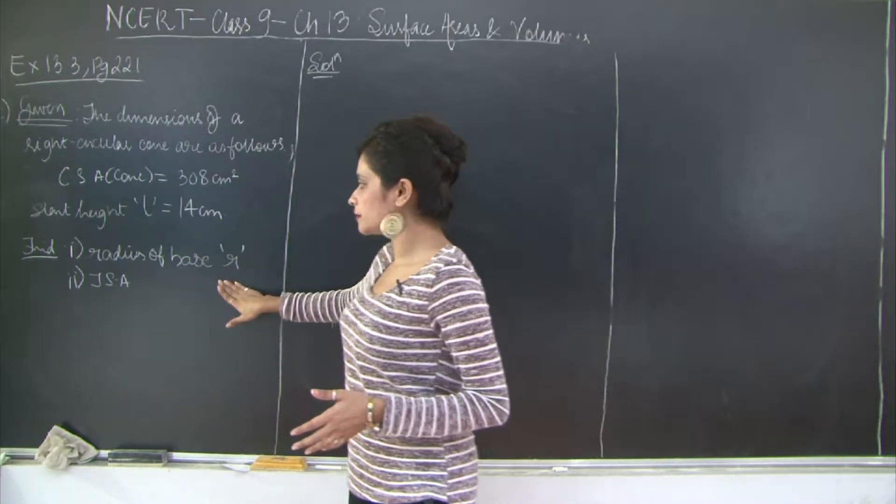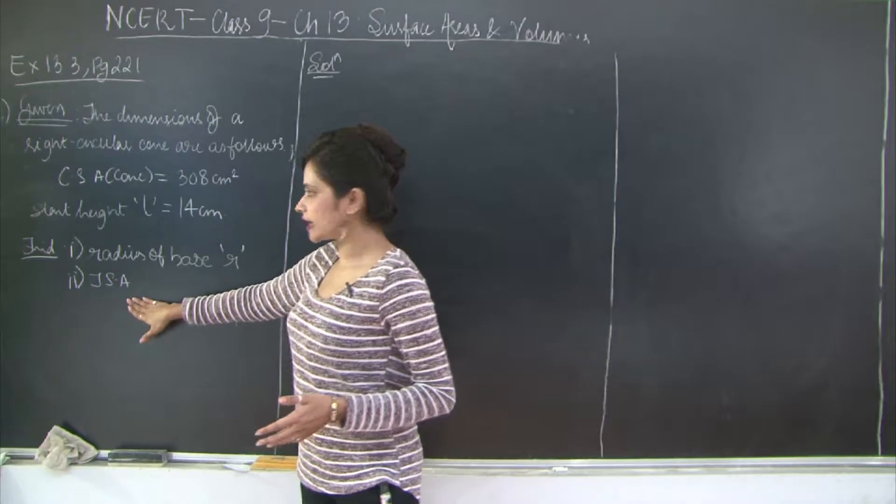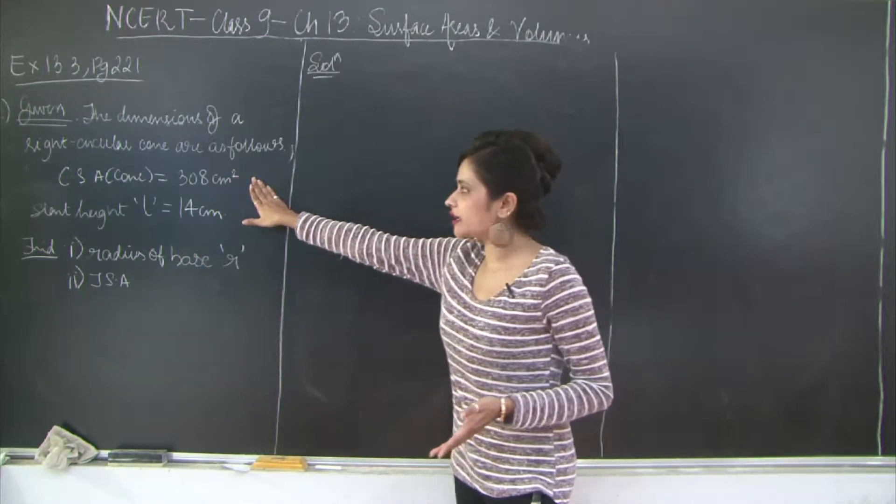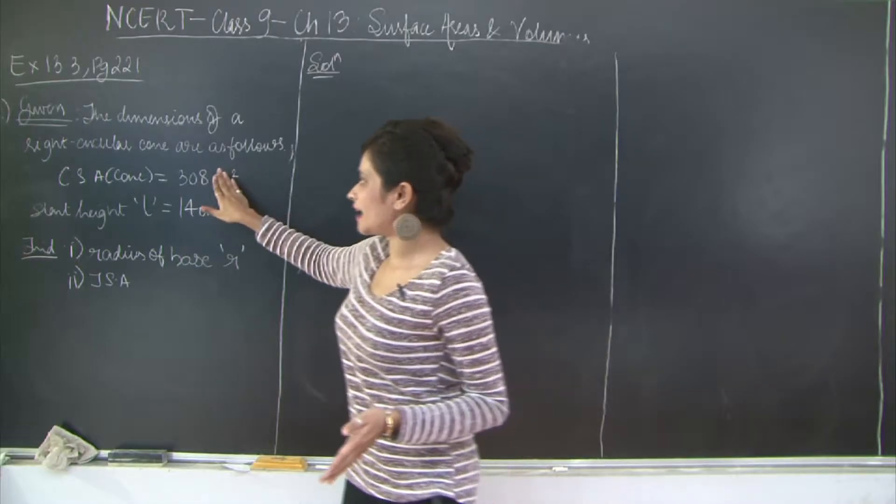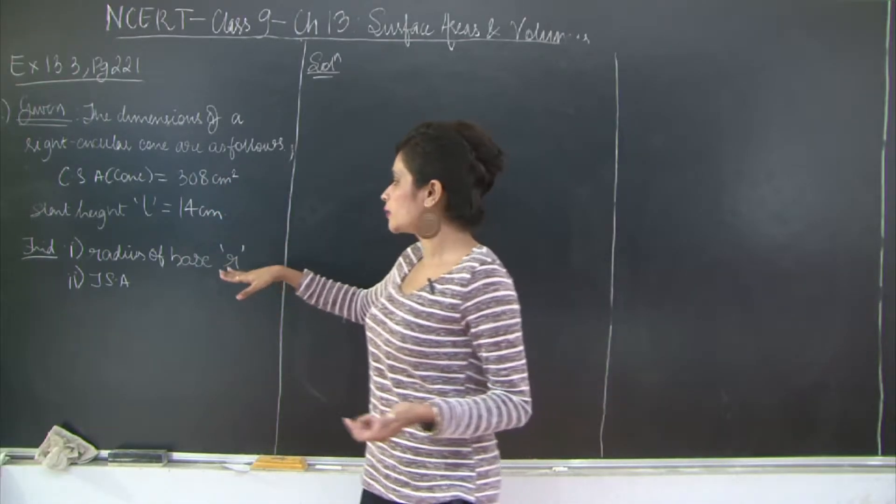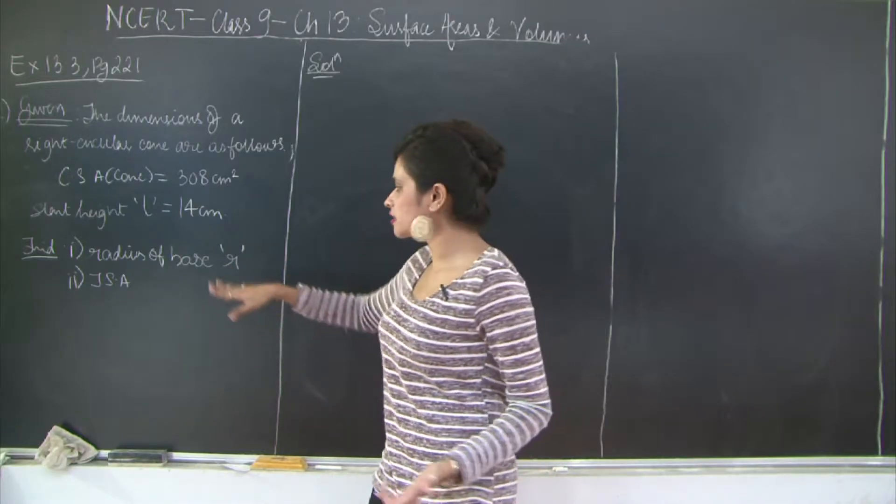The curved surface area is 308 cm² and the slant height L is 14 cm. You need to find two things: radius of the base R and total surface area. So the first one, see we have been given the curved surface area which is π r L. So we have the curved surface area, we have the length L. So in three variables we have been given two, obviously we can find the third one R.